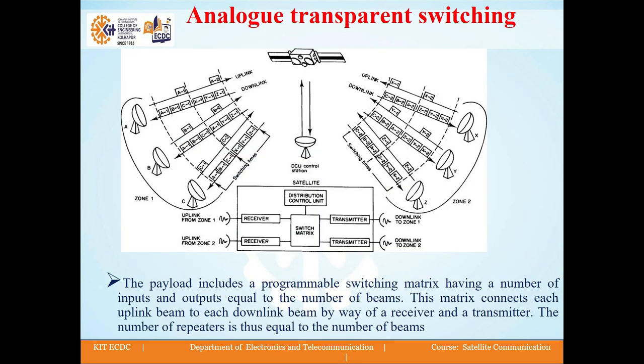Let us discuss analog transparent switching. The figure shows the principle of analog onboard transparent switching using an intermediate frequency switching matrix. The satellite payload comprises a programmable switching matrix that has a number of inputs and outputs equal to the number of beams. Through a transmitter and receiver, the switching matrix connects each downlink and uplink beam. The number of beams is the same as the number of repeaters.